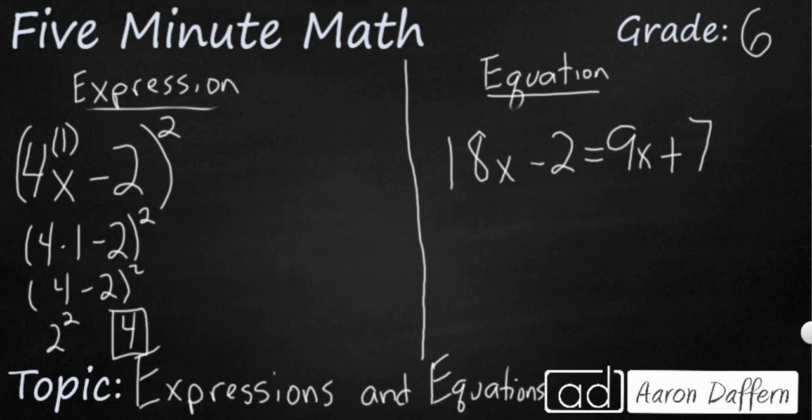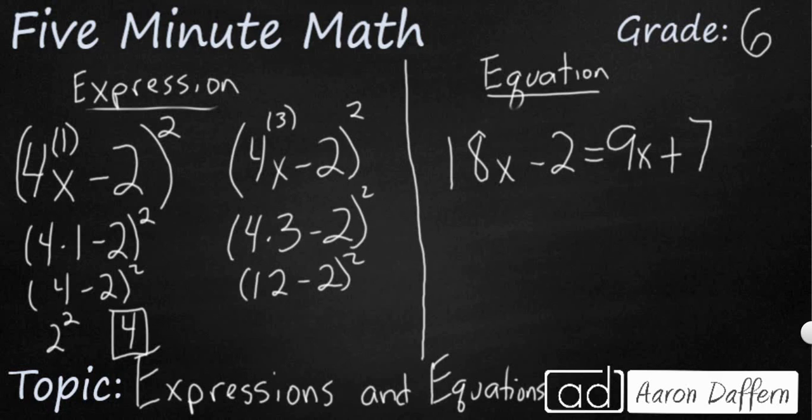But what if I were to take this exact same expression, 4x minus 2 squared, and replace the x with something a little bit larger, like 3? Well, that would be 4 times 3 minus 2 squared. So that's going to be 12 minus 2 squared. So that's really 10 squared, which makes 100.